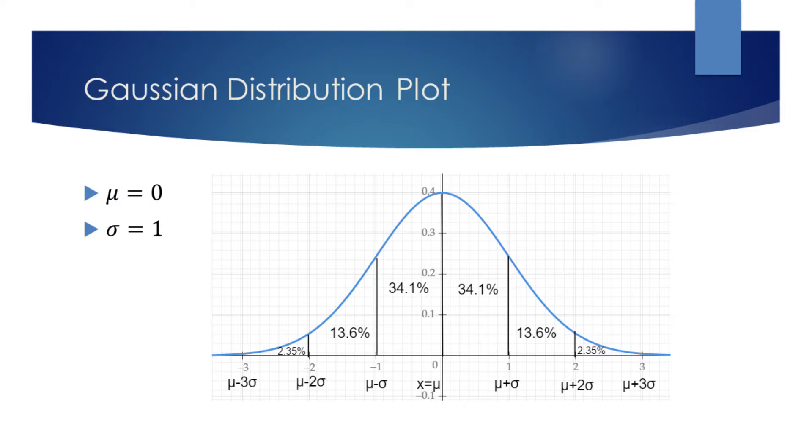If we continue in a similar fashion, we will find that 95% of the area under the curve is within two standard deviations from mean, and 99.7% is within three. This is called the 68-95-99.7 rule.